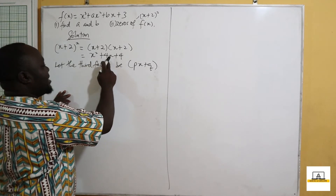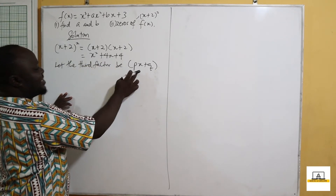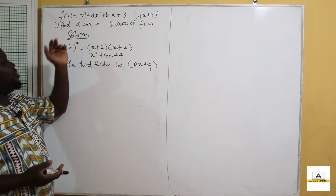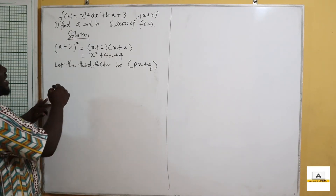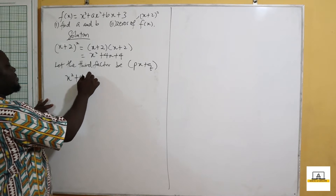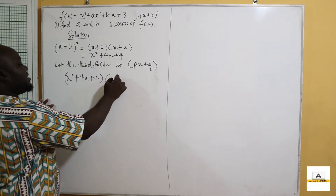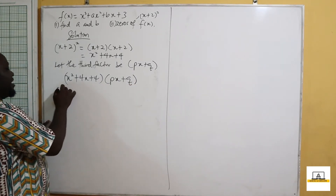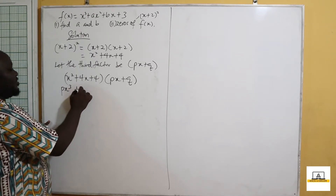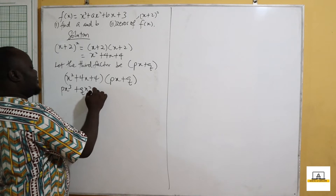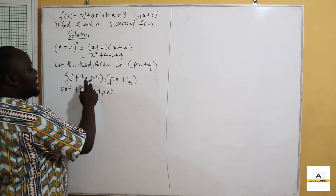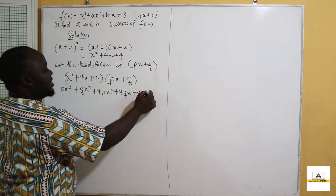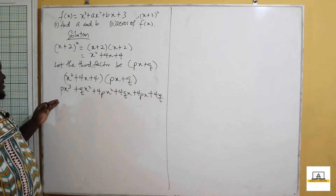So if we multiply this quadratic by this third factor, we get the complete factorization of the cubic function. So we shall have x squared plus 4x plus 4 multiplying px plus q. Expanding: x squared times px gives px cubed, x squared times q gives qx squared, 4x times px gives 4px squared, 4x times q gives 4qx, 4 times px gives 4px, and 4 times q gives 4q.